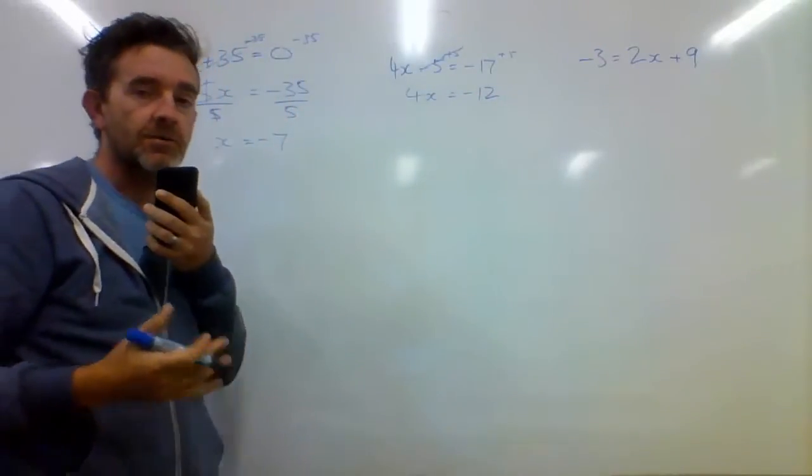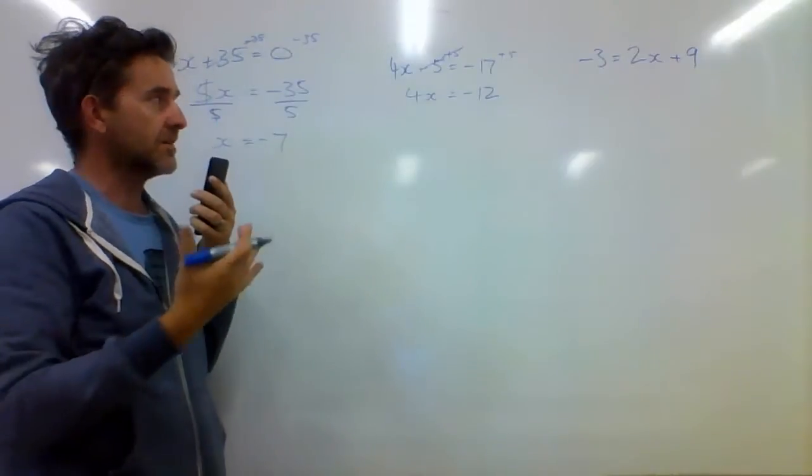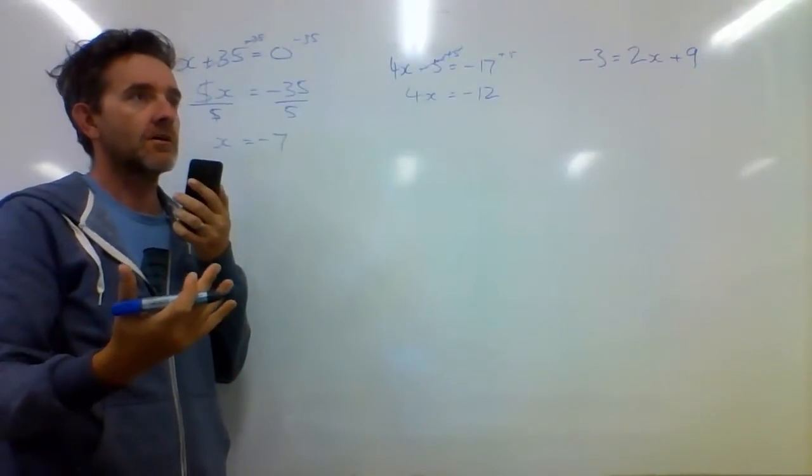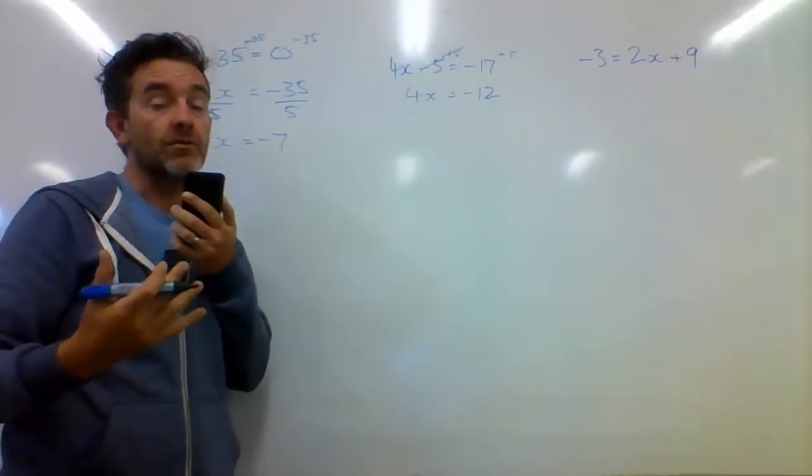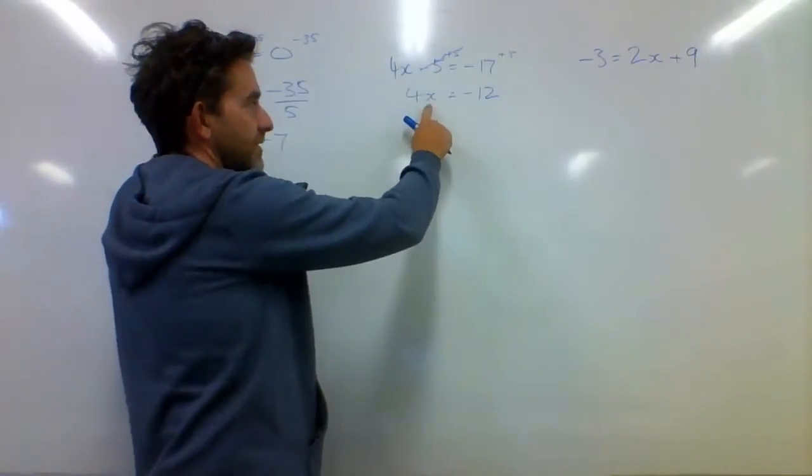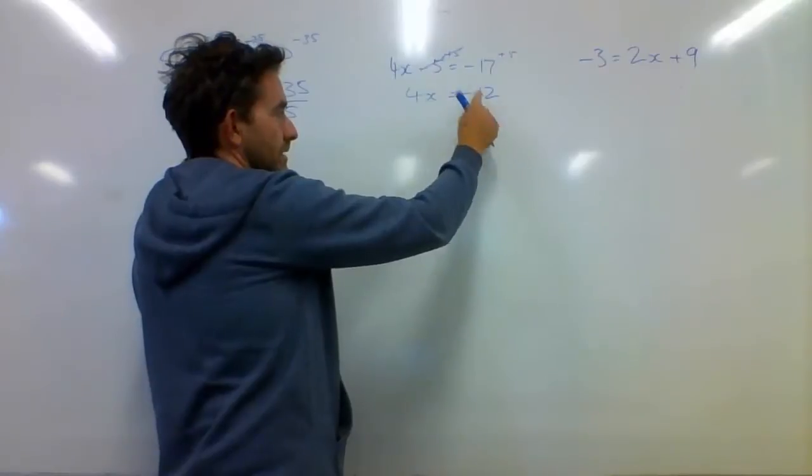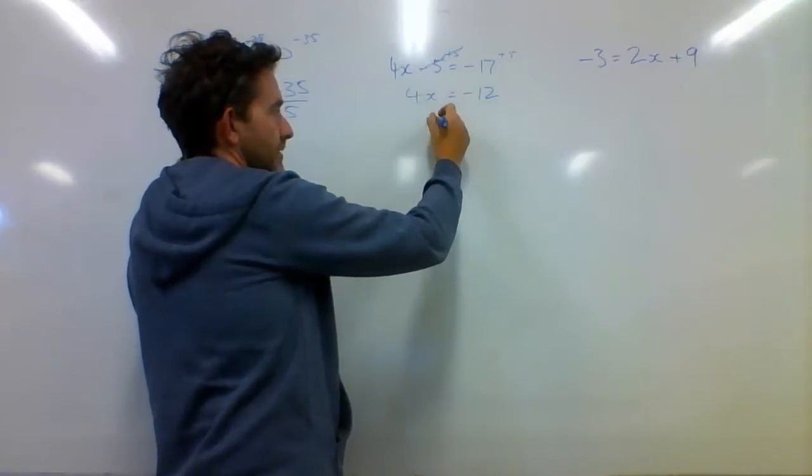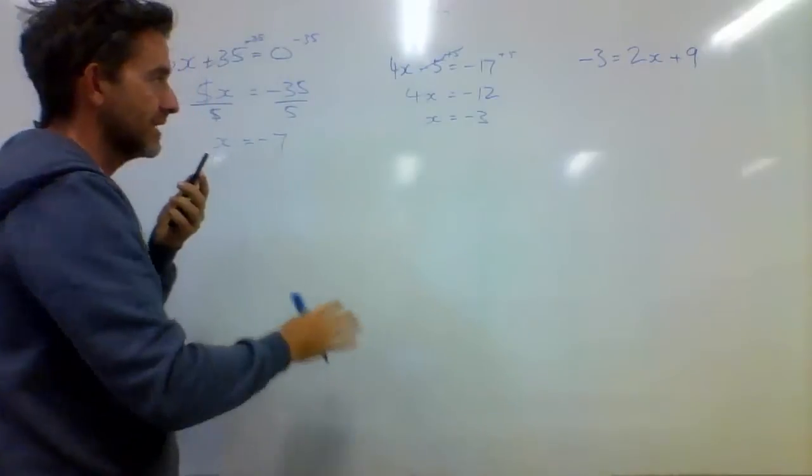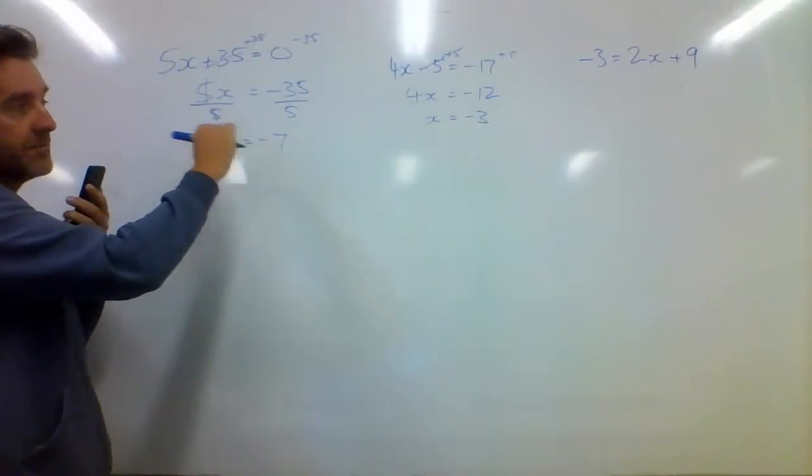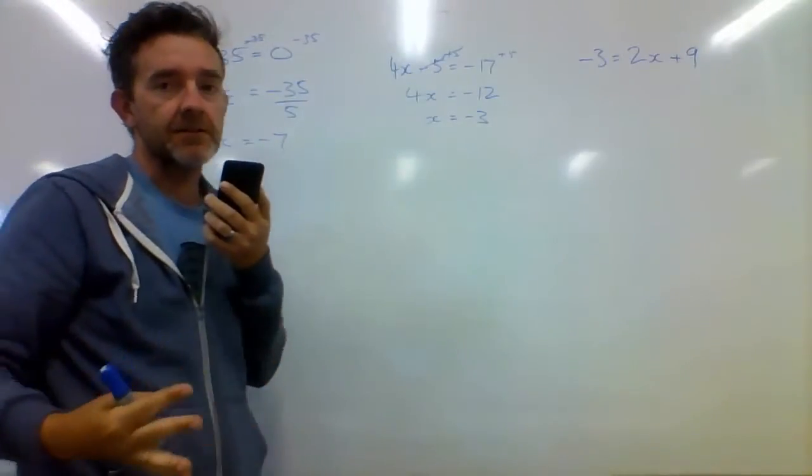Again, we're at a stage now where you should be able to solve that by inspection. 4 times something equals negative 12. We know that the factors of 12 are 4 and 3. 4 times 3 is 12. So 4 times negative 3 would equal negative 12. So x is negative 3. And I could have done the working out like I did over here by dividing both sides by 4, but the answer is going to be the same.